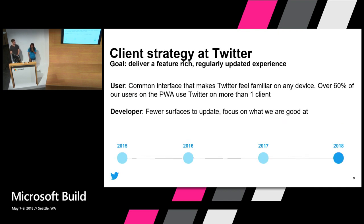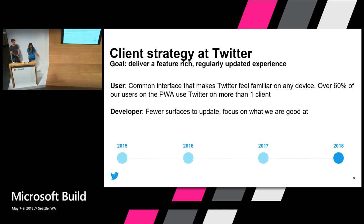As PM of the client team at Twitter, our goal is to deliver a feature-rich, regularly updated experience. With the expansion of the PWA to more platforms, I'd like to think about the impact in two ways. First, there's the user point of view — we're delivering a more common interface to help Twitter feel familiar on any device. Over 60% of our users on the PWA use more than one device, and that's where this familiarity across clients really matters. Then there's the developer point of view, where developers now have fewer surfaces to update. A strong core app means less duplication of effort when building new features, allowing developers to focus on what really matters — such as performance.